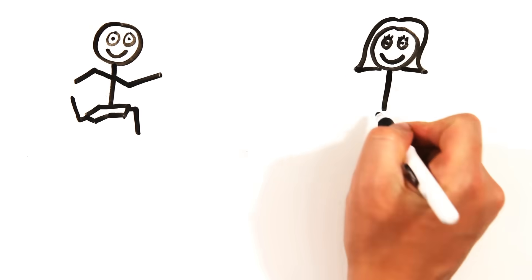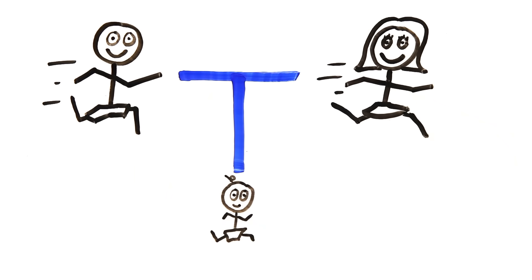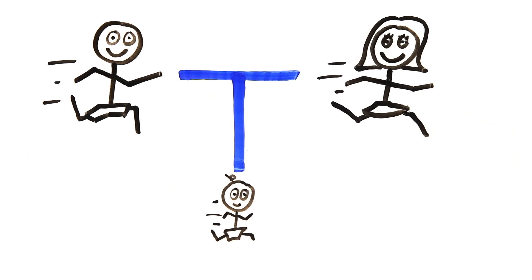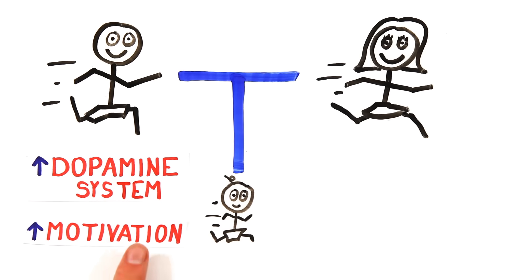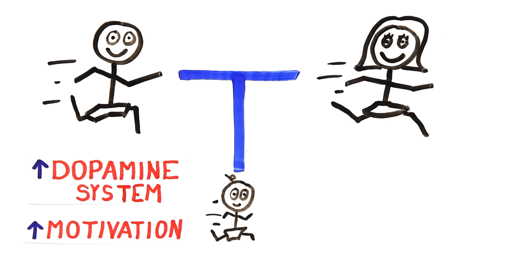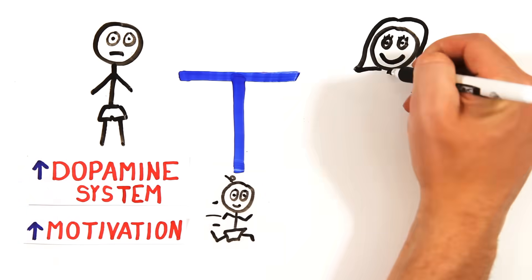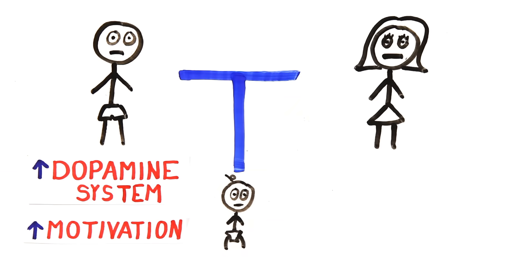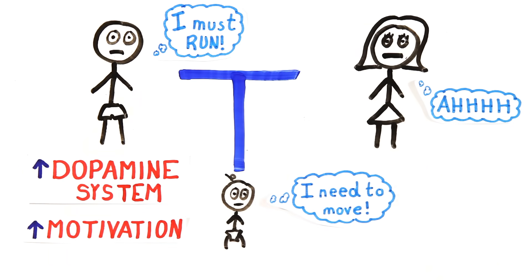We all inherit genes from our parents that play a key role in the development of our brains and these genes can make some literally crave activity. In fact, the brains of the running mice had larger dopamine systems and regions that deal with motivation and reward. They needed activity otherwise their brains would react similar to a drug addicted rodent when deprived of cocaine or nicotine. They were genetically addicted to running.